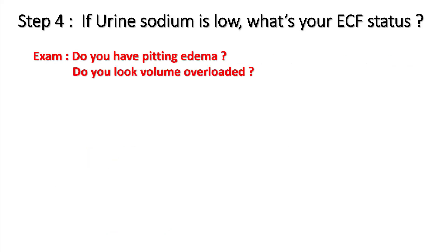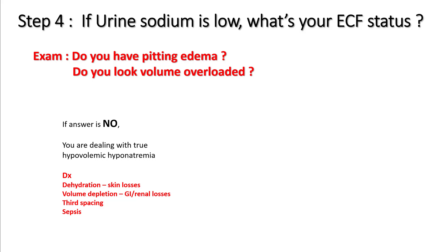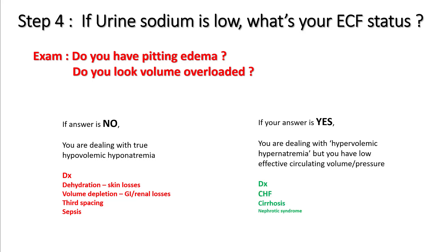Step four: if your urine sodium is low, try to figure out your extracellular fluid status — that means looking at whether you have any pitting edema, ascites, or signs of volume overload. If the answer is no, you are dealing with true hypovolemic hyponatremia — the patient is dehydrated and volume depleted from GI, renal, or skin losses, third spacing, or sepsis. If you have features of volume overload, you are most likely dealing with hypervolemic hyponatremia, where you have a lot of ECF volume but low effective circulating volume — seen in heart failure, cirrhosis, and nephrotic syndrome.